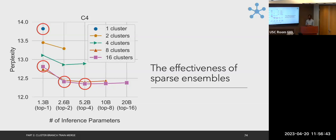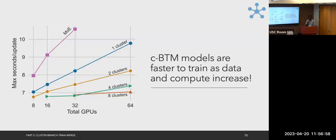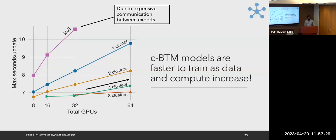Looking at training speed measured in seconds per update: as the compute budget grows, you want to train more clusters for faster training. We get faster training as we increase the number of clusters because we have less synchronization between experts. Classic token-level MoE models are expensive to train due to lots of communication between token-level-specialized experts, while our approach avoids this.